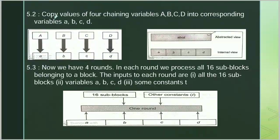In Step 5.2 we copy the values of 4 chaining variables A, B, C, D into corresponding variables small a, b, c, d। Basically जो 4 chaining variables हैं उनकी value को 4 corresponding small variables में copy कर रहे हैं। अगर हम इन small a, b, c, d का internal view देखें तो यह 4 × 32-bit numbers हैं, 4 × 32-bit registers हैं। लेकिन एक combined view में ये एक 128-bit का single buffer दिखाई देता है, जो intermediate and final result of MD5 Algorithm को hold करता है।